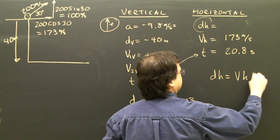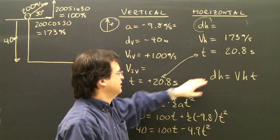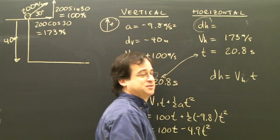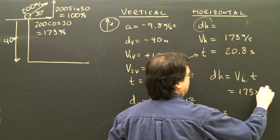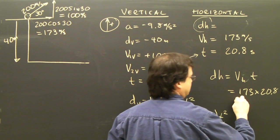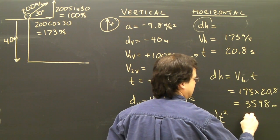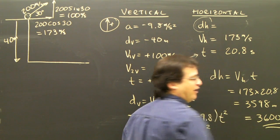So horizontal velocity times time from V equals D over T. So D equals V horizontal times T. So that is 173 times 20.8 is 3598 meters. So let's call it 3600 meters. We want to round off a little bit.